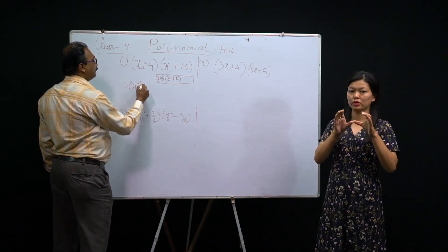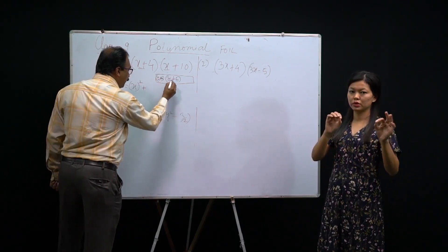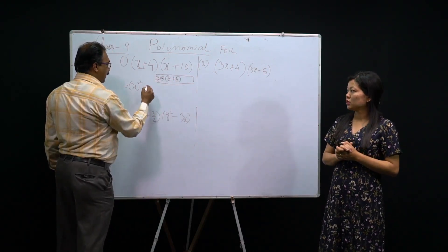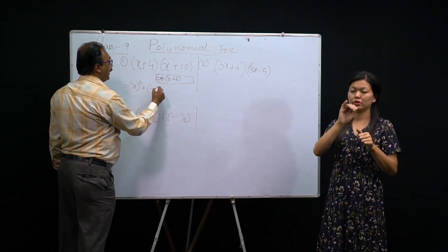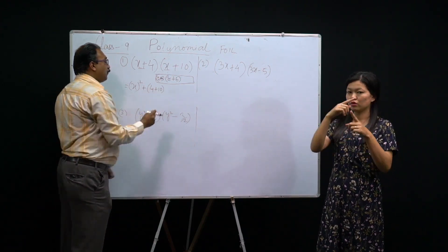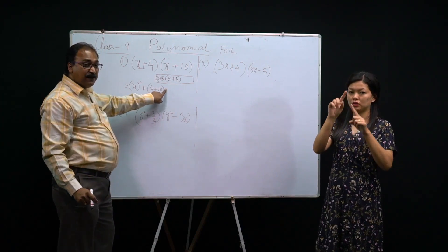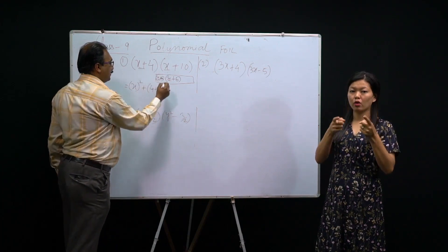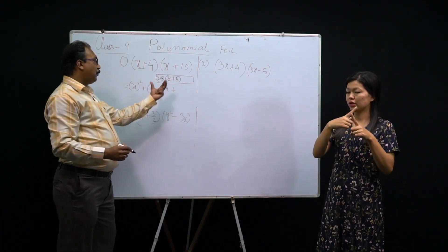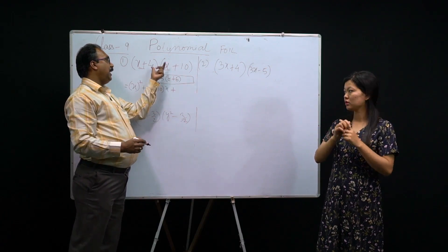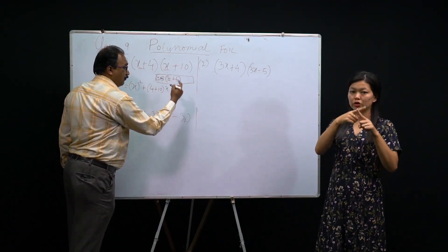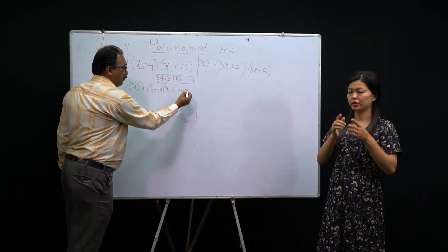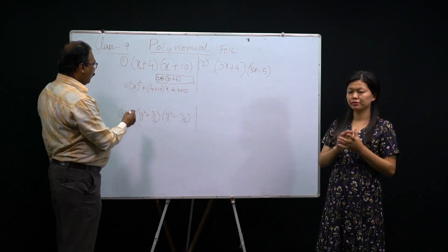So x squared, correct. Then plus the sum of the second terms: (a+b). Do you remember a plus b? Here a is 4, b is 10, so 4 plus 10, close bracket. After that, write the first term again — x was there, so x. Then plus the product of the last terms: a into b, which is 4 into 10. Refer to the formula always.